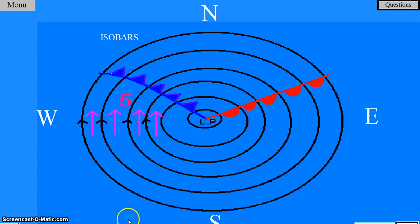This is known as a backing of the wind and it takes place in an anti-clockwise direction in the southern hemisphere.